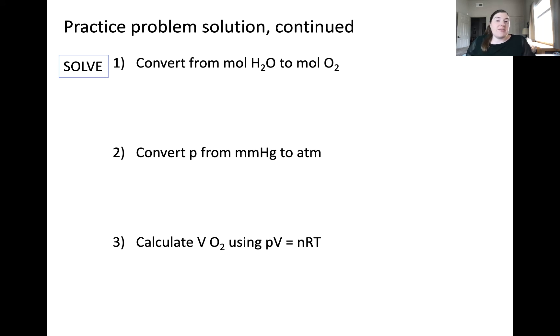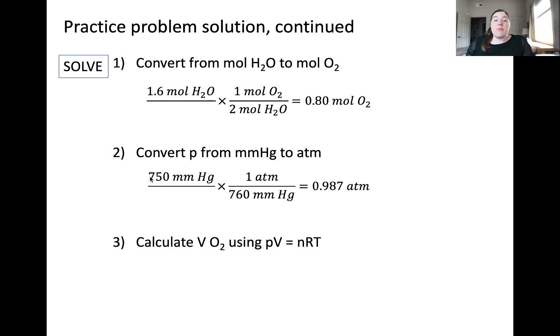First converting from moles of water to moles of oxygen. This is our standard reaction stoichiometry using the mole to mole ratio from the balanced equation. Moles of water is in the denominator. Then we can convert millimeters of mercury, the pressure in millimeters of mercury, to the pressure in atmospheres using the conversion factor 760 millimeters of mercury is equal to one atmosphere.